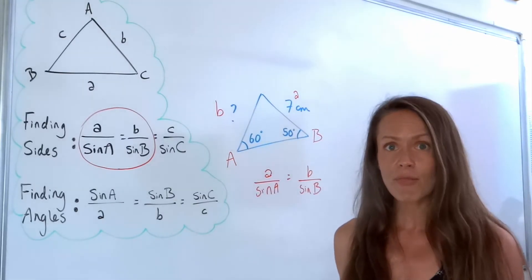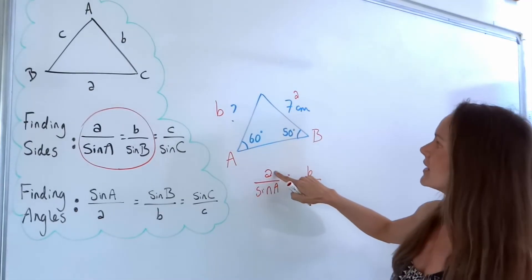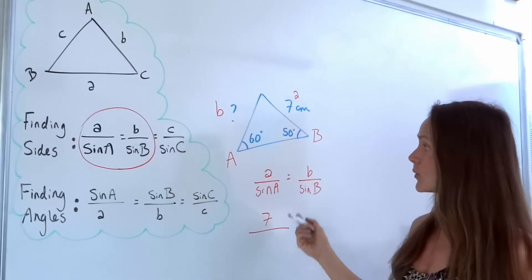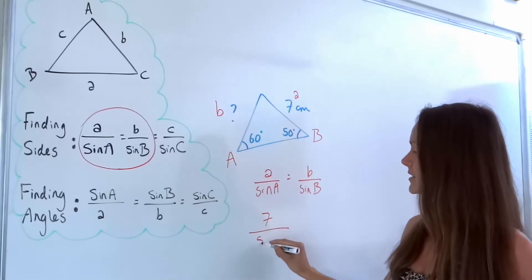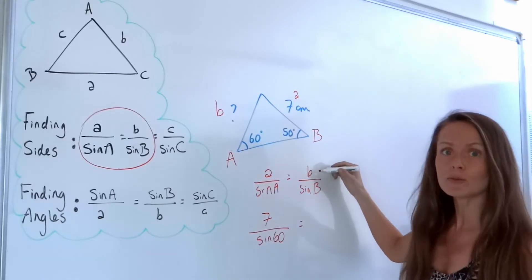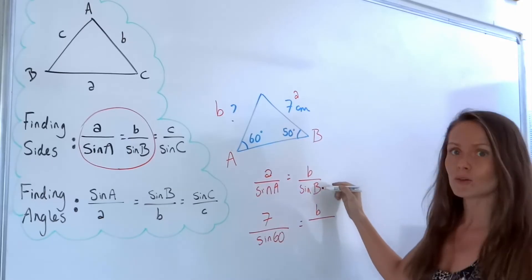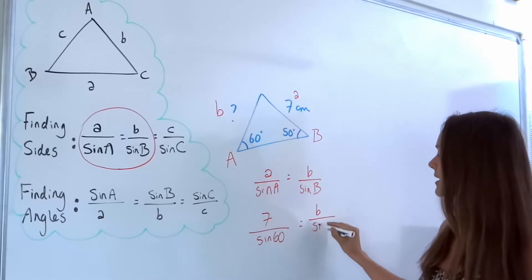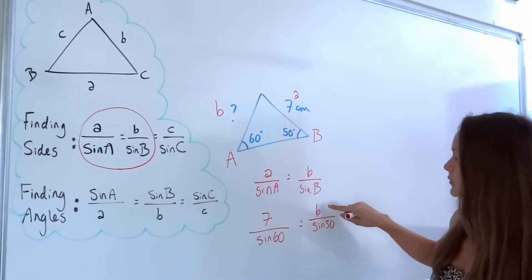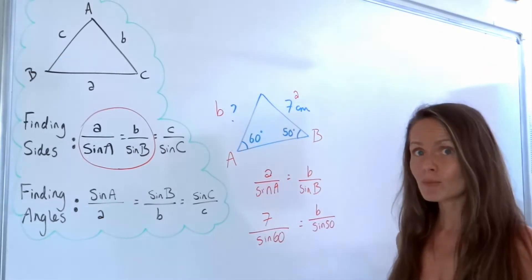Substituting in everything we know: side A is 7 centimetres, so we put 7. Angle A is 60, so we write sine 60 underneath. On the right, we don't know B yet so we leave that, but angle B is 50 so we replace that with sine 50. Now solving this equation — B is being divided by sine 50, so we do the opposite and multiply.